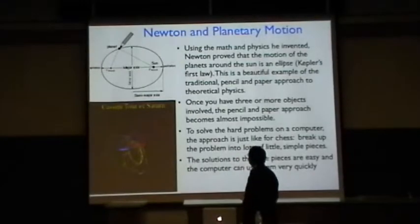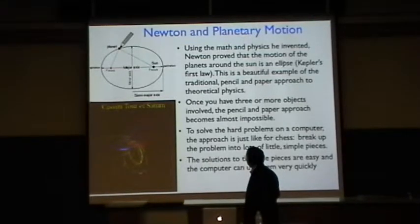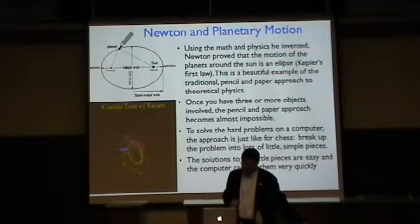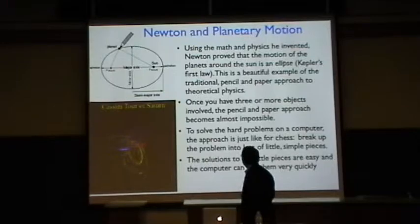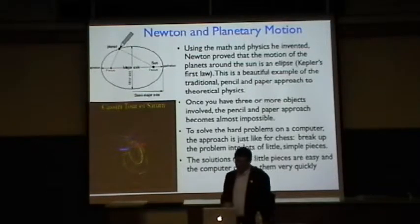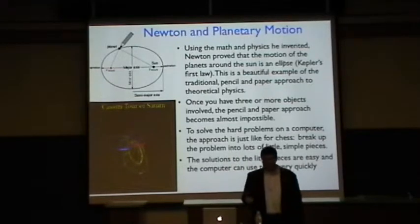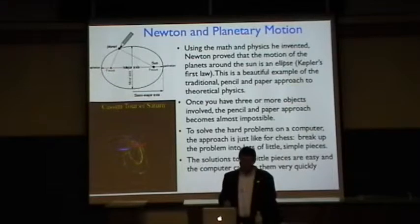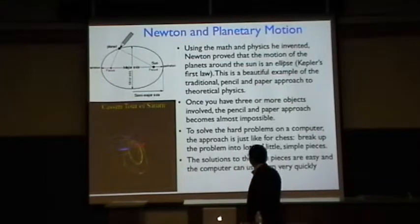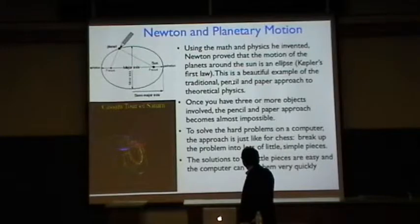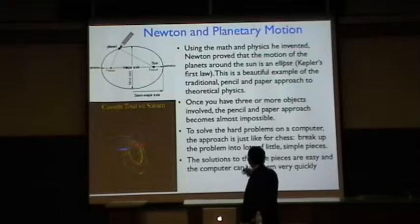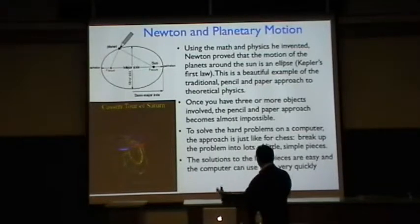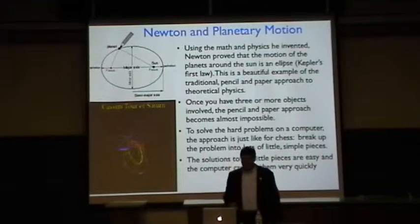Let's look at Newton and planetary motion. Using the math, the calculus, and the physics that he invented, and using his universal law of gravitation, he proved that the motion of the planets around the sun, ignoring the other planets, was an ellipse. Kepler had already stated this, this is Kepler's law, but Kepler had gotten it by observation. This is a beautiful example of the traditional pencil and paper approach to theoretical physics, where you do something with your mathematics and analysis, you compare to experiment, and you explain something.